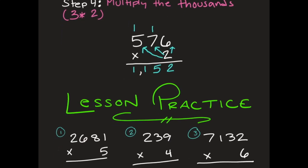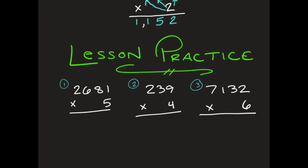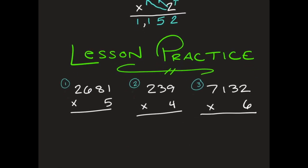And so today your lesson practice problems, you have three of them that you are working on. So you have 2,681 times five. And then number two, 239 times four, and number three, 7,132 times six.